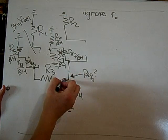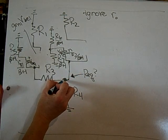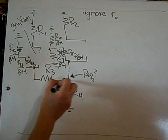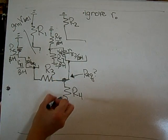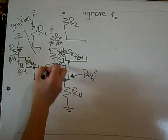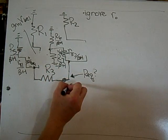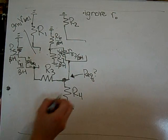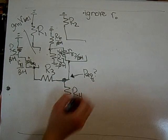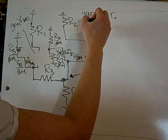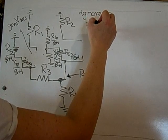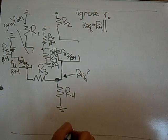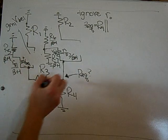So R_equivalent — I'm going to take a pathway from here back to ground. On this side I have two splits, so I have this branch in parallel with this branch in parallel with this branch up here. I'm going to first write the easiest one, which is r4. So R_equivalent will be r4 in parallel with this branch over here.